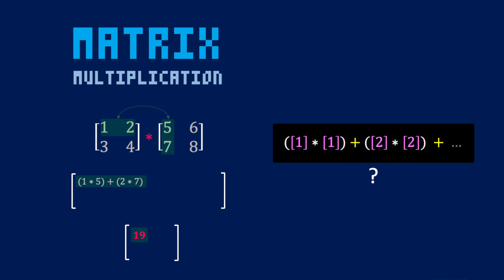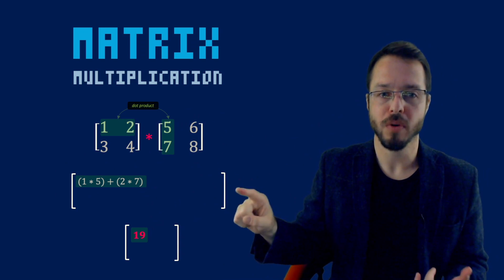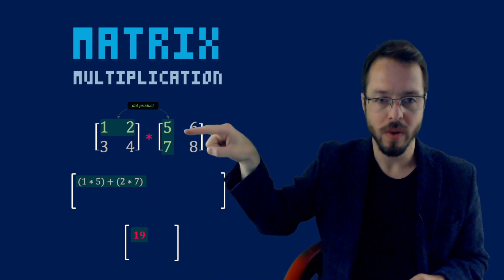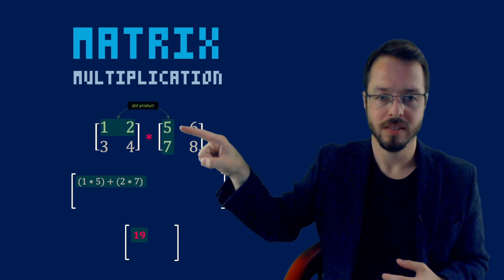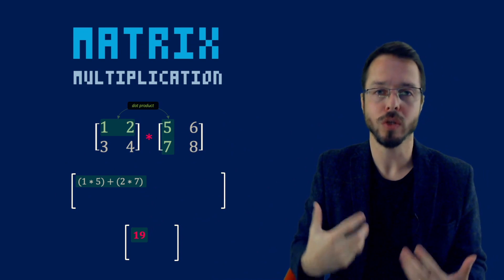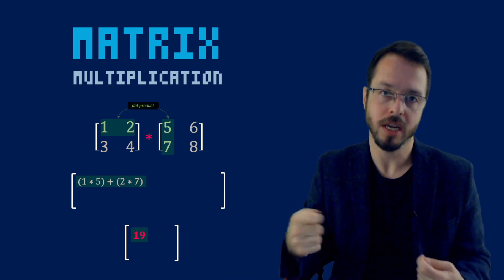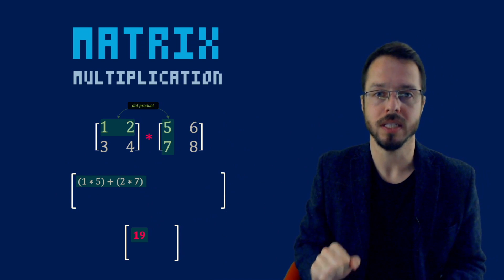There was a vector operation that was exactly this — the first times the first plus the second times the second plus the third times the third. What vector operation gives us x times x plus y times y? The answer is the dot product. So it's almost like I'm performing a dot product between this row vector and this column vector. One times five plus two times seven is like taking the dot product between those two vectors inside the matrix. Rows, columns — think dot product. I think it's a lot easier if you remember it that way.